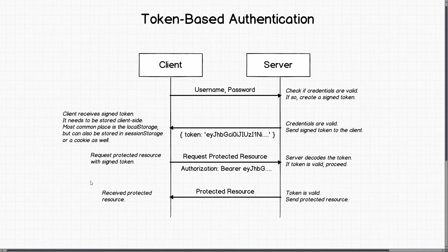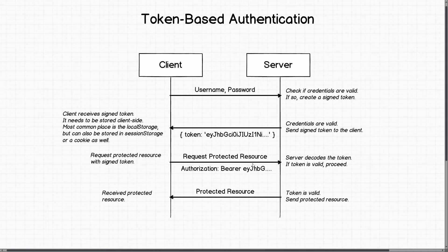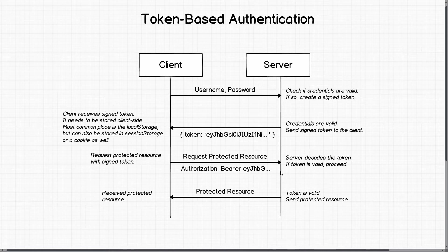When the client wants to request a protected resource, it makes that request and sets an Authorization header with 'Bearer' followed by the token string, pulling the token from local storage. The server receives that token, decodes it, and checks whether it is valid.